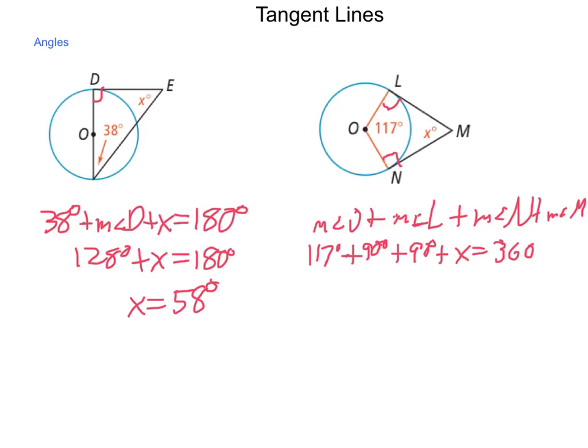90 and 90 make 180. 180 plus 117 is 297 degrees plus X equals 360 degrees. Subtracting the 297 degrees from both sides, using my subtraction property of equality, we come out with X equaling 63 degrees.